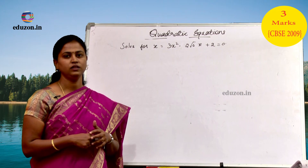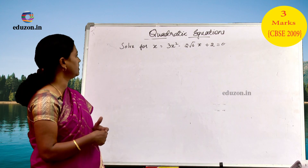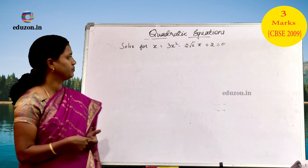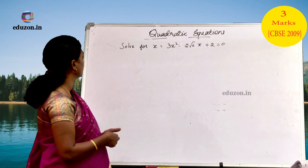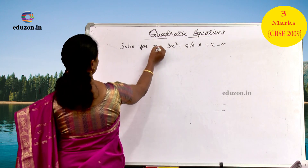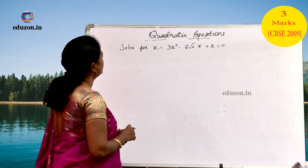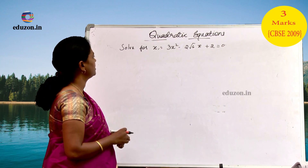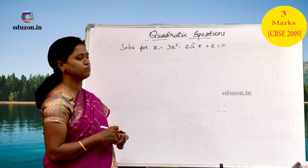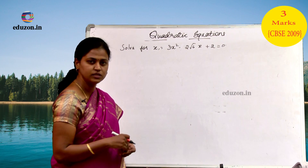Now, let us solve the given quadratic equation. What is the quadratic equation that we have been given? Solve for x when 3x squared minus 2 root 6 times x plus 2 is equal to 0.